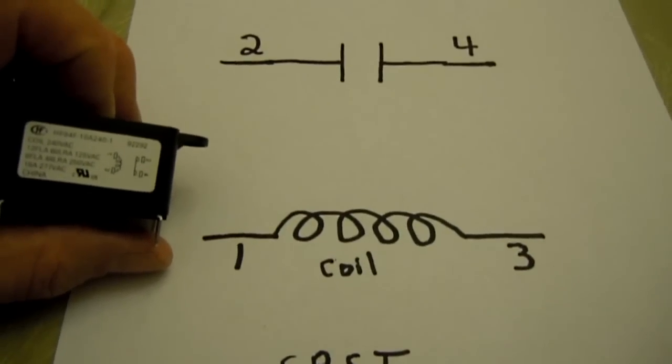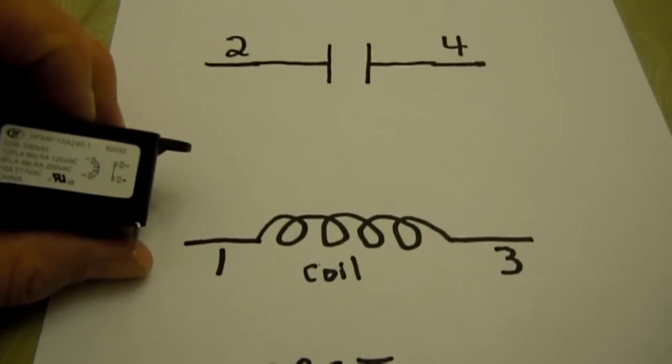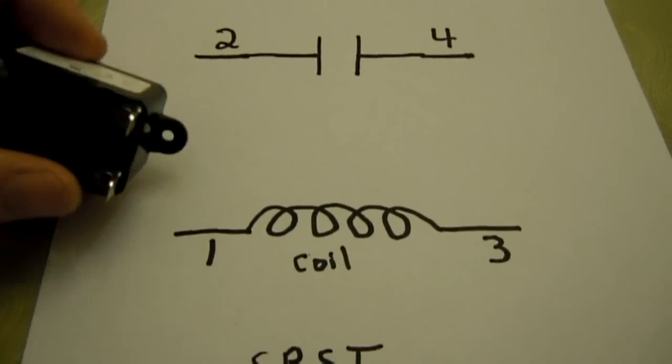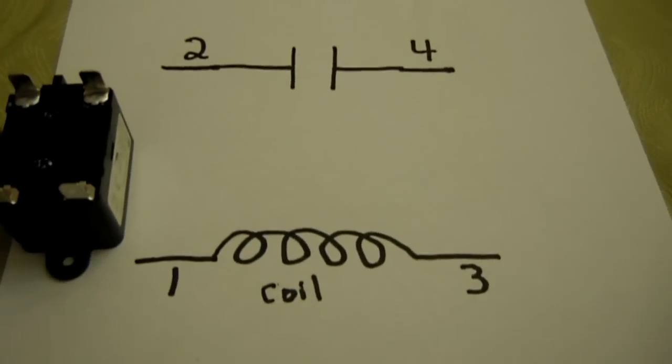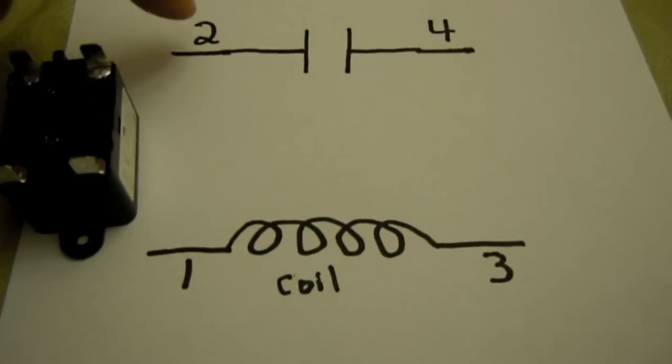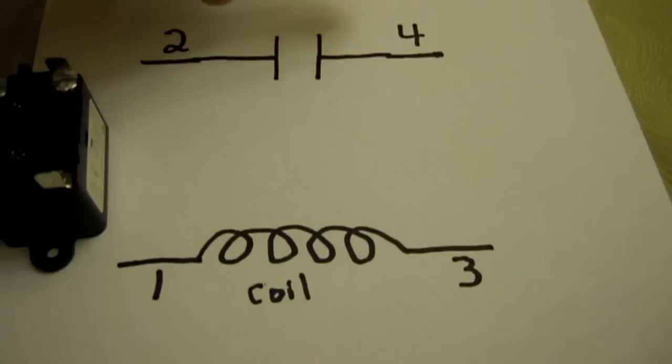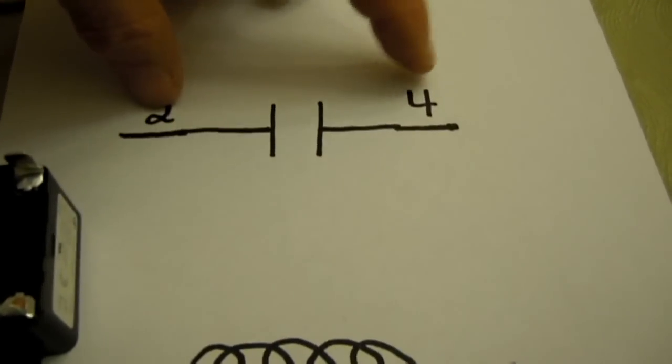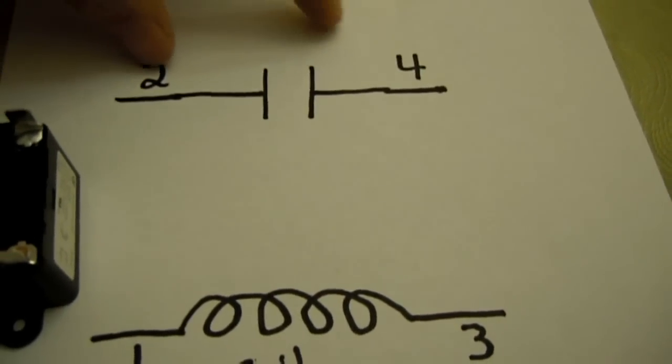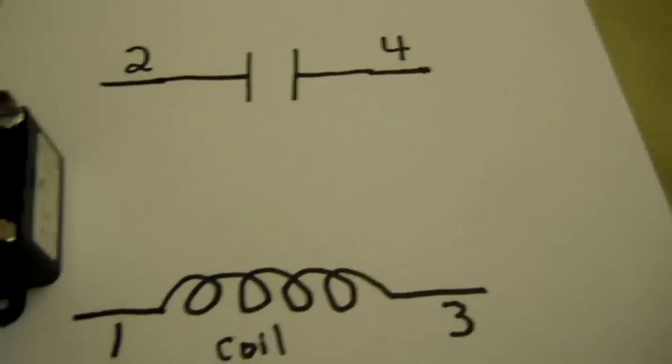It looks a little bit different from the wiring diagram that is printed on the side of the relay, but it means the same thing. One and three is your coil, and two and four is your single pole normally open. So when it energizes, it closes.